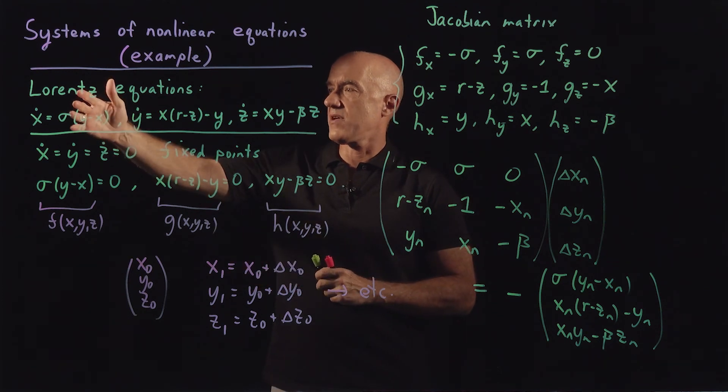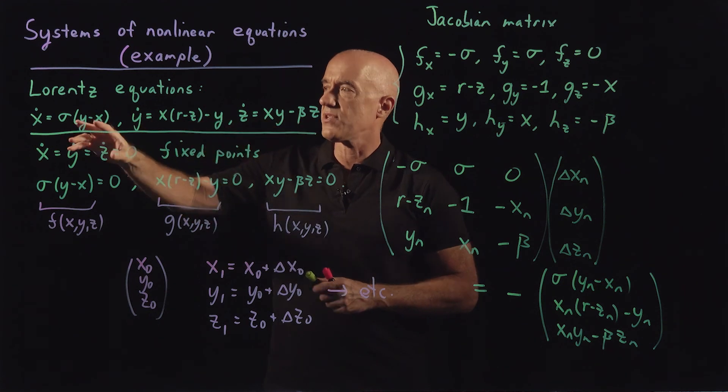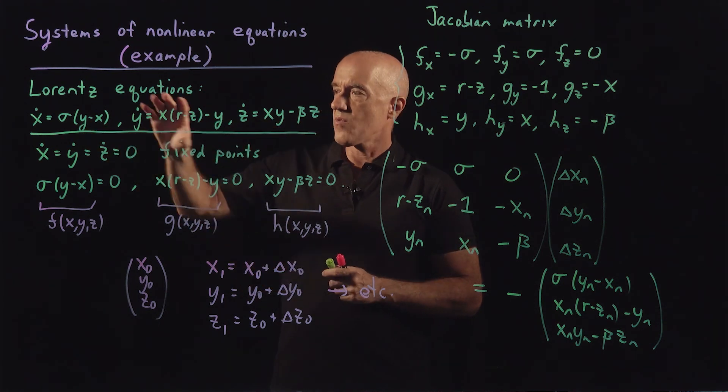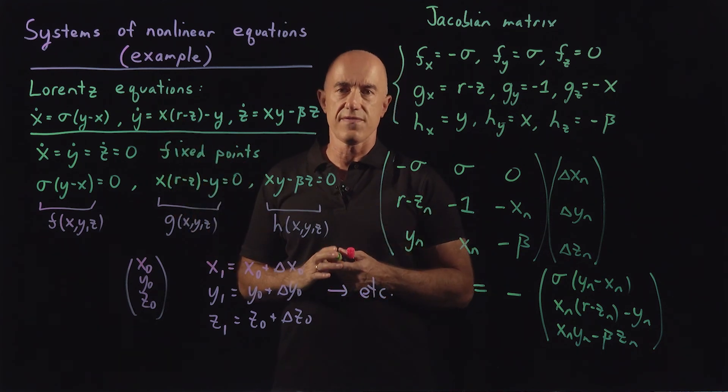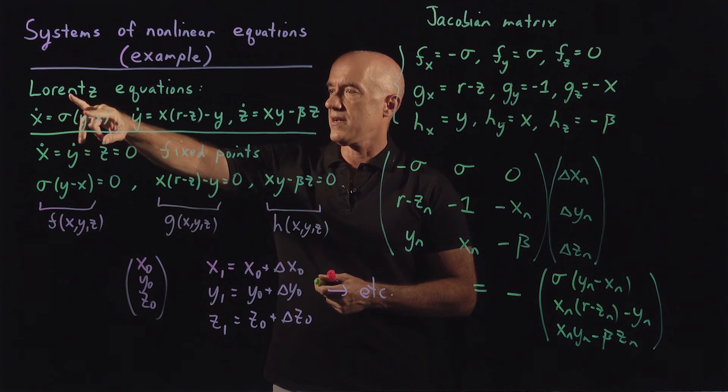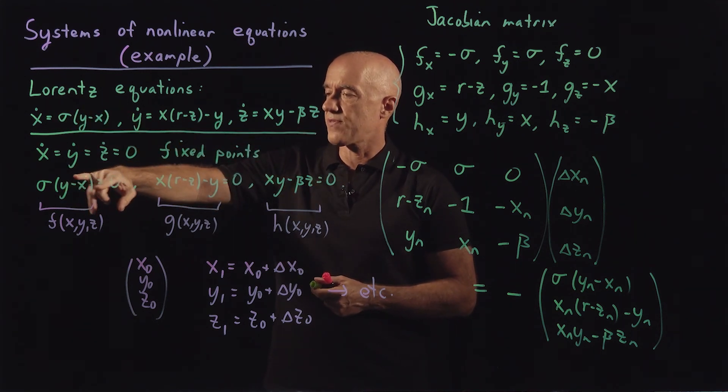We're given a system of nonlinear equations. Here it's differential equations that are called the Lorentz equations. We're trying to use Newton's method to find the fixed points of this equation. So we set the time derivatives to zero.